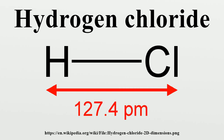The compound hydrogen chloride has the chemical formula HCl. At room temperature, it is a colorless gas, which forms white fumes of hydrochloric acid upon contact with atmospheric humidity. Hydrogen chloride gas and hydrochloric acid are important in technology and industry.